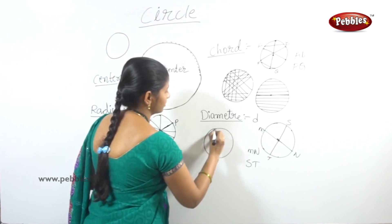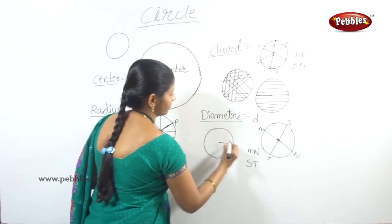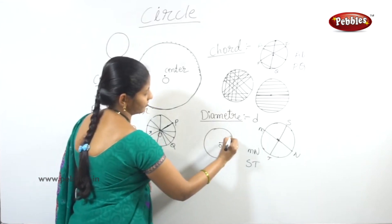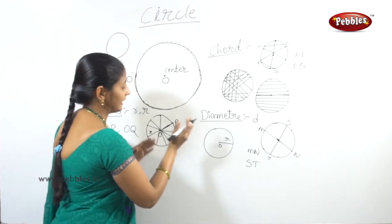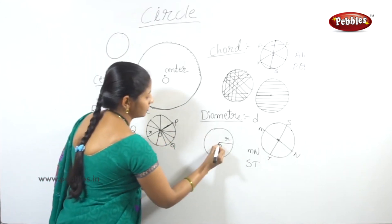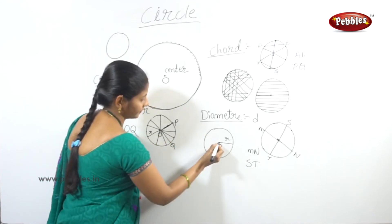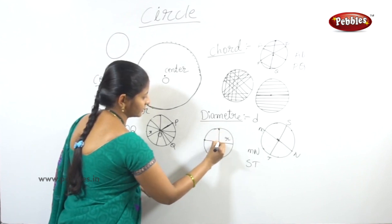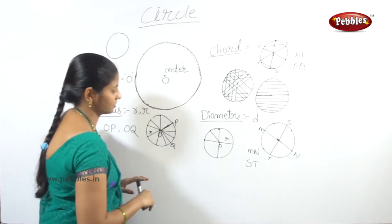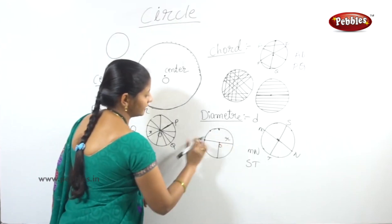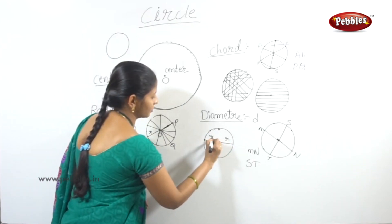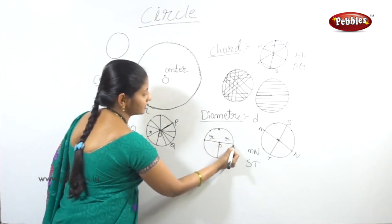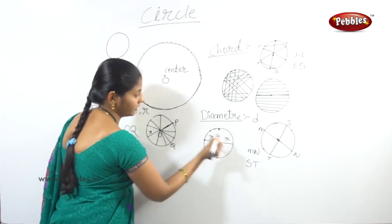I will draw the radius. Center O — the radius goes from the center to any point on the circle. We can draw many radii from center O to different points on the circle.